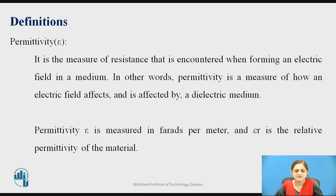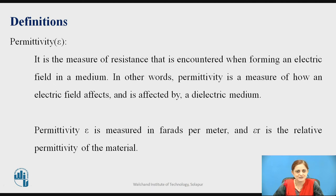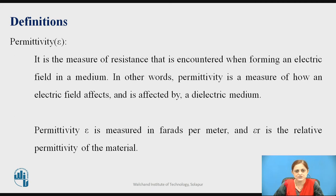Before starting the boundary conditions exactly, some definitions are required for the different parameters. First is permittivity, denoted by the symbol epsilon. It is a measure of the resistance encountered when forming an electric field in a medium — in other words, a measure of how an electric field affects and is affected by a dielectric medium. Permittivity is measured in Farads per meter. It is defined as ε = ε₀εᵣ, where ε₀ is the permittivity of free space and εᵣ is the relative permittivity of the material.